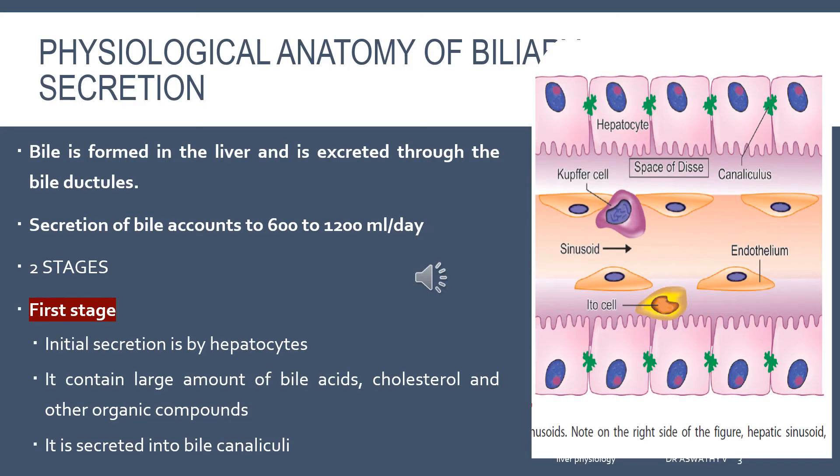In the past class we studied the functional anatomy of liver — the polygonal lobules present in the liver, the central vein, and hepatocytes radiating like spokes in a bicycle from the central vein towards the periphery. We also studied the portal triad consisting of portal vein, hepatic artery and the bile duct. Here we can see the hepatocytes and the canaliculus. The bile is formed in the liver and excreted through the bile ductules.